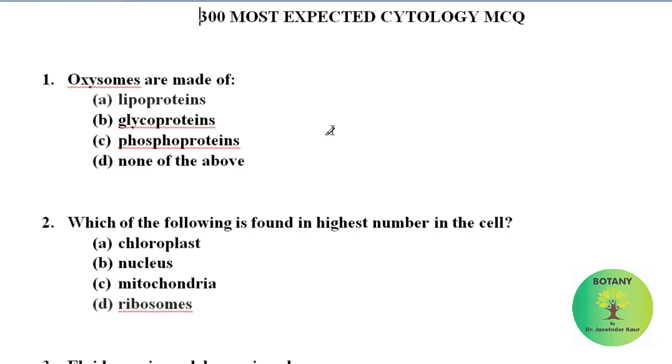Let's start. Oxysomes are made up of what? These are the structures that are present on the surface of the folded inner membrane of mitochondria. They are also called as F0 or F1 particles or ATP synthetase. So oxysomes are made up of lipoproteins.